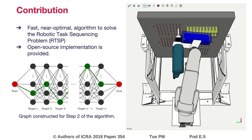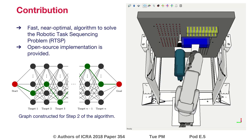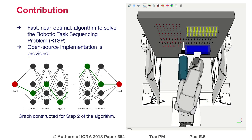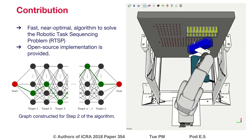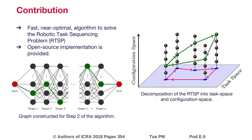Step 3: compute the collision-free trajectories by running classical motion planning algorithms. Our second contribution is to provide an open-source implementation of the proposed algorithm. In particular, we carefully benchmark different key components to come up with an efficient and ready-to-use software solution.